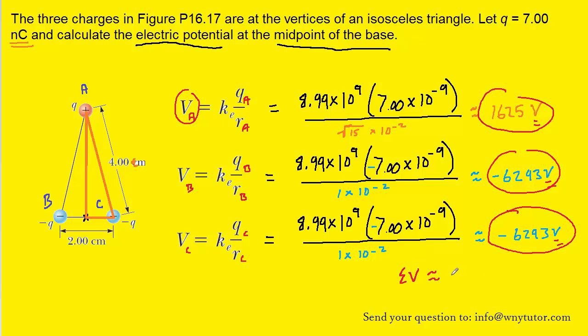And when we do that, we get roughly negative 1.1 times 10 to the fourth volts. And that would indeed be the correct answer.